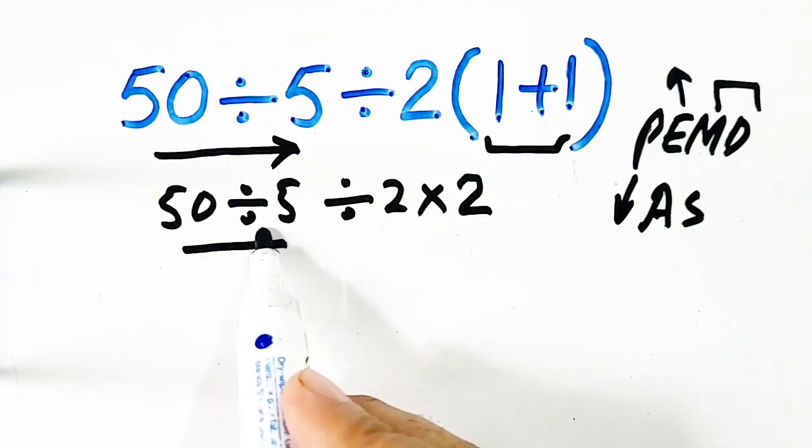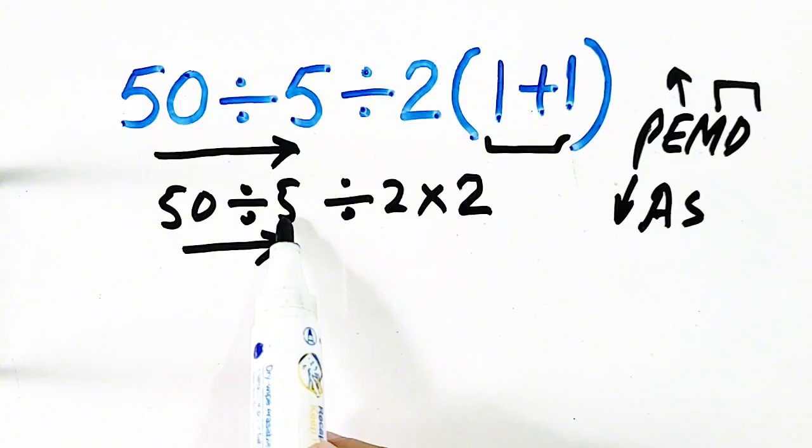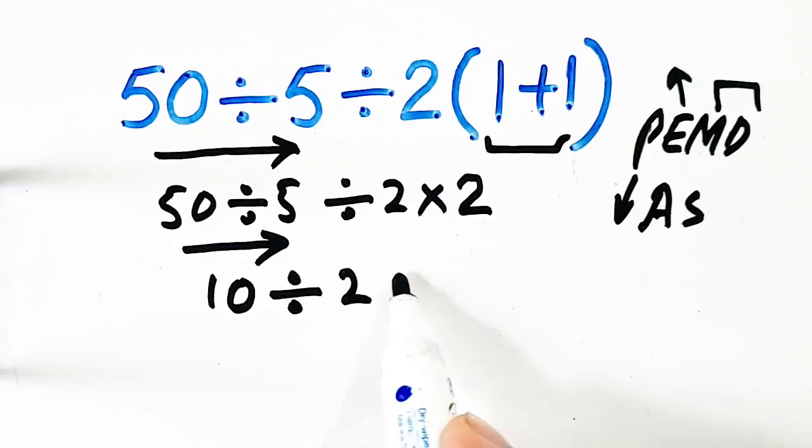The rule says that we have to move from left to right. So, 50 divided by 5 will be solved first. 50 divided by 5 will be equal to 10. Then, 10 divided by 2 times 2.